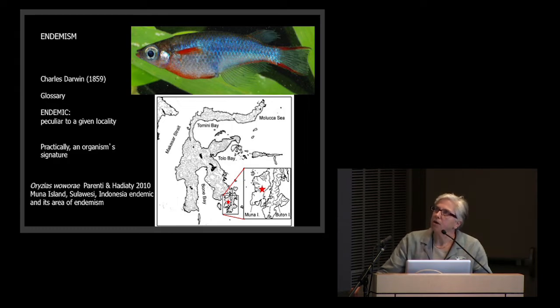This is a photograph of a colorful little rice fish that I described with an Indonesian colleague in 2010. It is endemic to a spring-fed pool on Muna Island, a small island off the southeast coast of Sulawesi, indicated by that little red star there, and then blown up on the right. This particular species, like many others, has a very small area of endemism, but some species can have very broad areas of endemism in contrast.